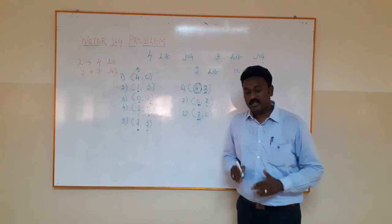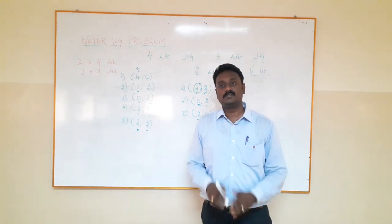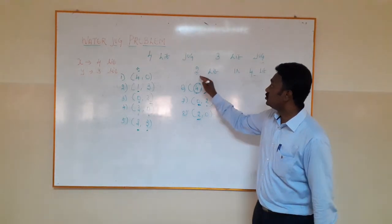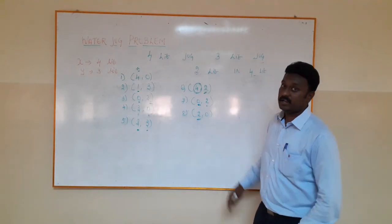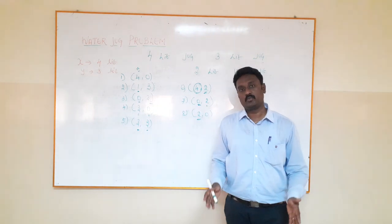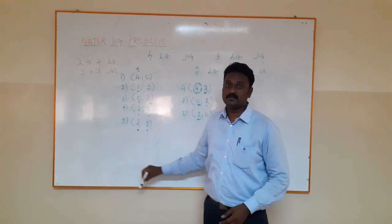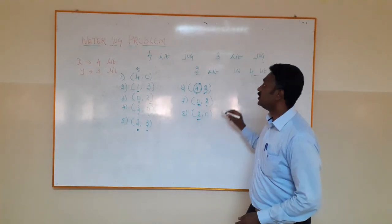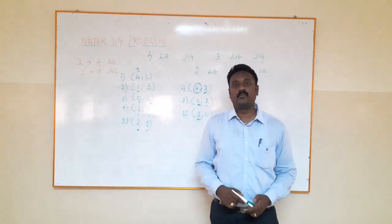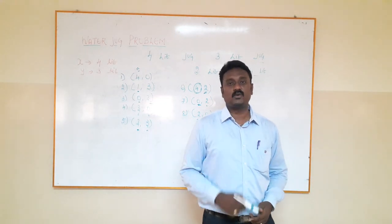Now I pour the water from the three-litre jug back into the four-litre jug — the four-litre jug now holds exactly two litres of water. This is how we prove that two litres of water can be measured in a four-litre jug without any measuring equipment, demonstrated in terms of state space representation in artificial intelligence. Hope it will be useful — thank you for watching.